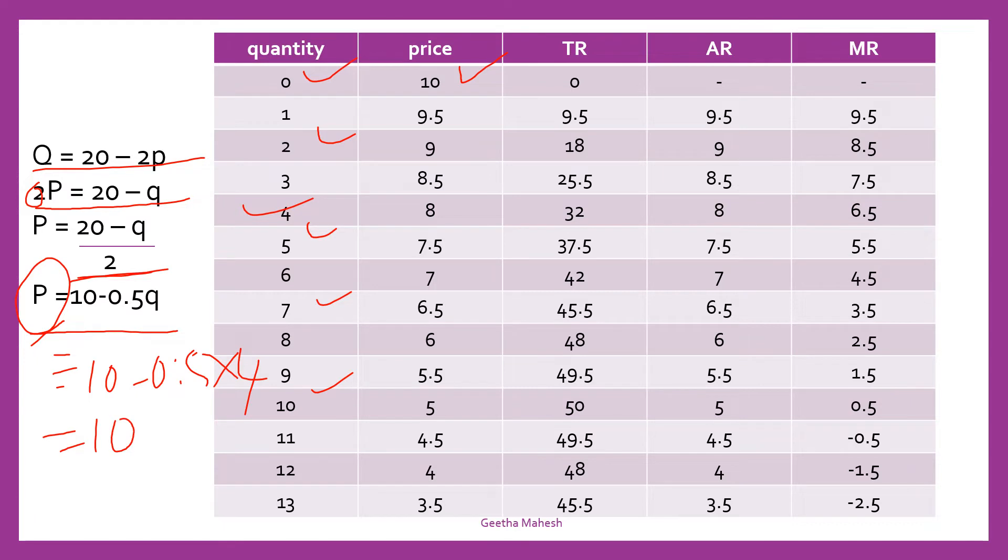So, this is equals 10 minus 0.5 into 4. You will get it 2. So, 10 minus 2 is nothing but 8. What is the price? 8. You can sell 4 units of water at 8 rupees.